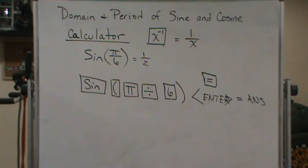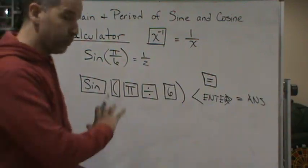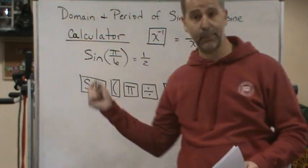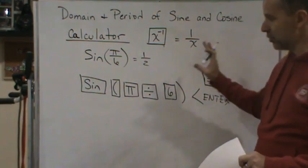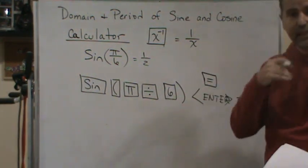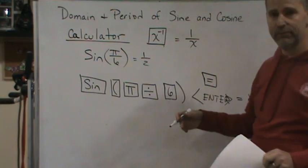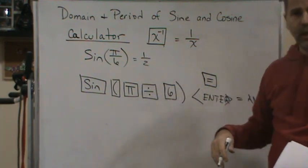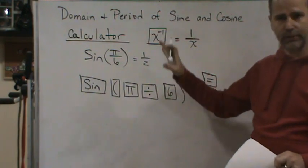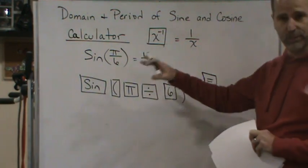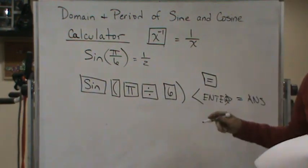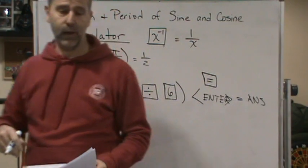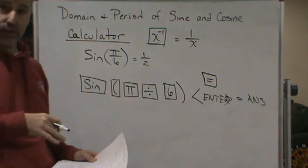So practice with the common angles. Practice with the calculator with the common angles that we already know how to evaluate using the unit circle, and make sure that you get the correct answer. Use the easy ones, like 1 half. If you want to do square root of 2 over 2, like 45 degree angle or pi over 4, that's fine too. Just make sure you evaluate and get the same answer in your calculator.